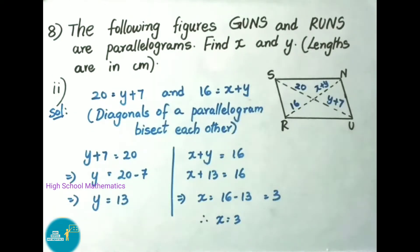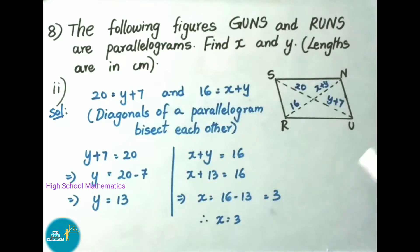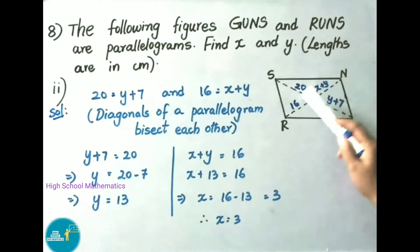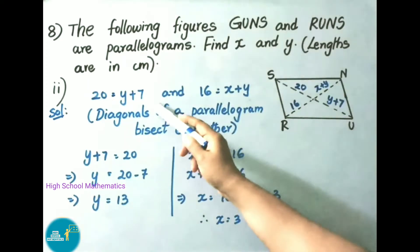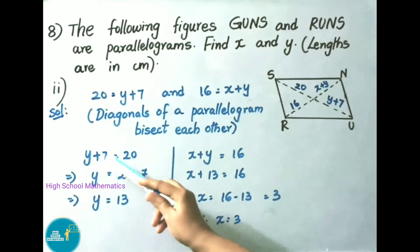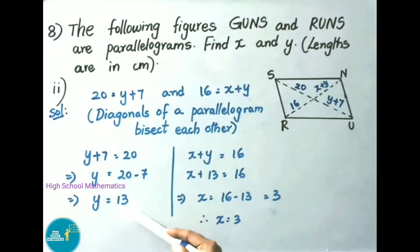Now question 8 second sum: parallelogram RUNS (R-U-N-S). The values given are 20, y plus 7, 16, and x plus y. From this figure, 20 equals y plus 7 and 16 equals x plus y, because the diagonals of a parallelogram bisect each other. Taking the first part: y plus 7 equals 20, so y equals 20 minus 7, which is 13.